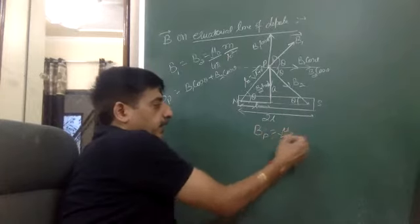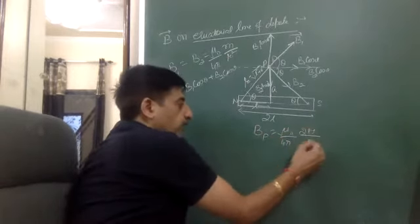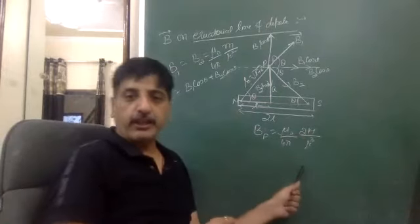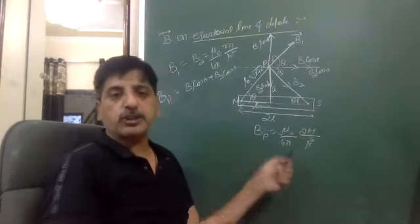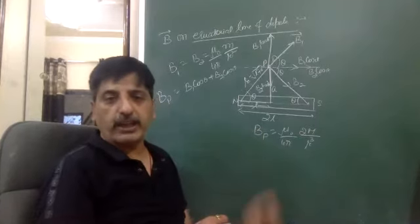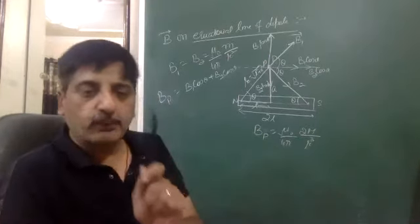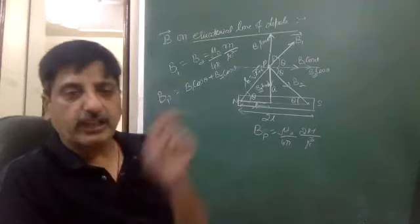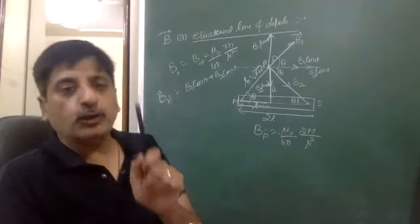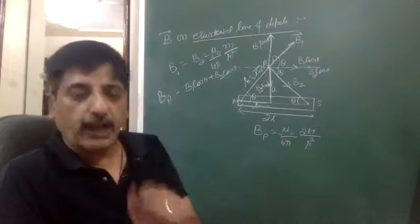The magnetic field along the axial line is mu0 by 4π into 2M by R³. For the axial line versus the equatorial line, the magnetic field on the equatorial line will be half that of the axial line.